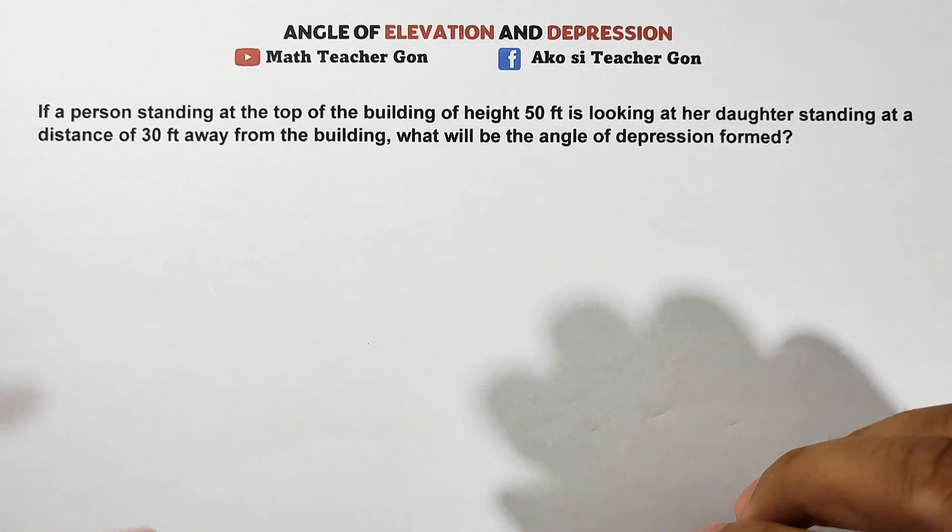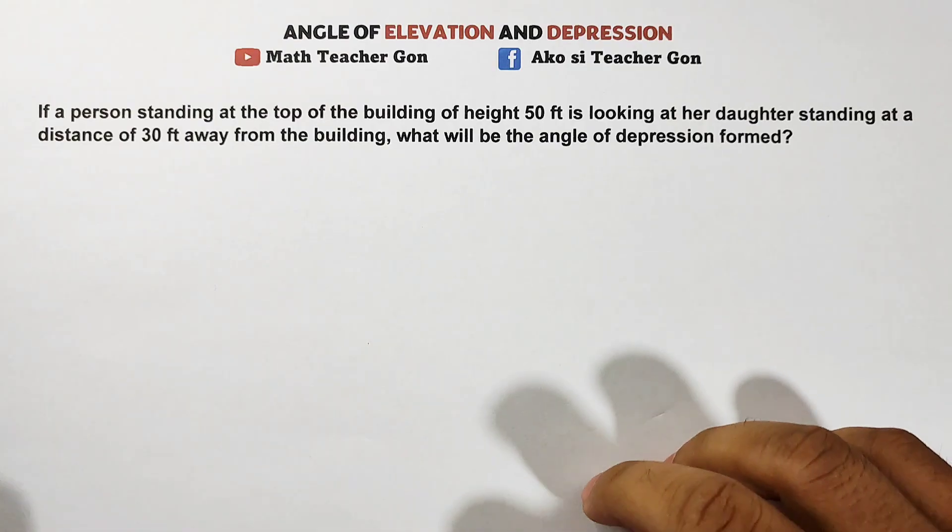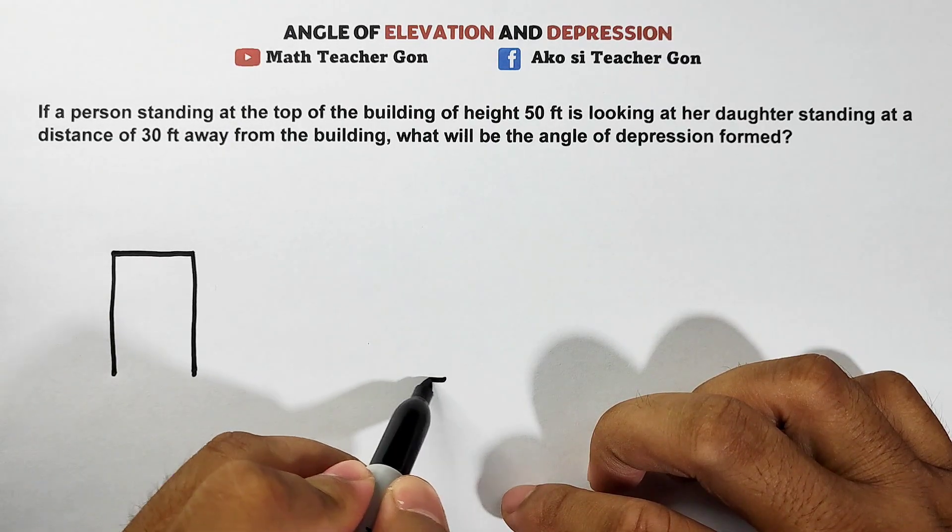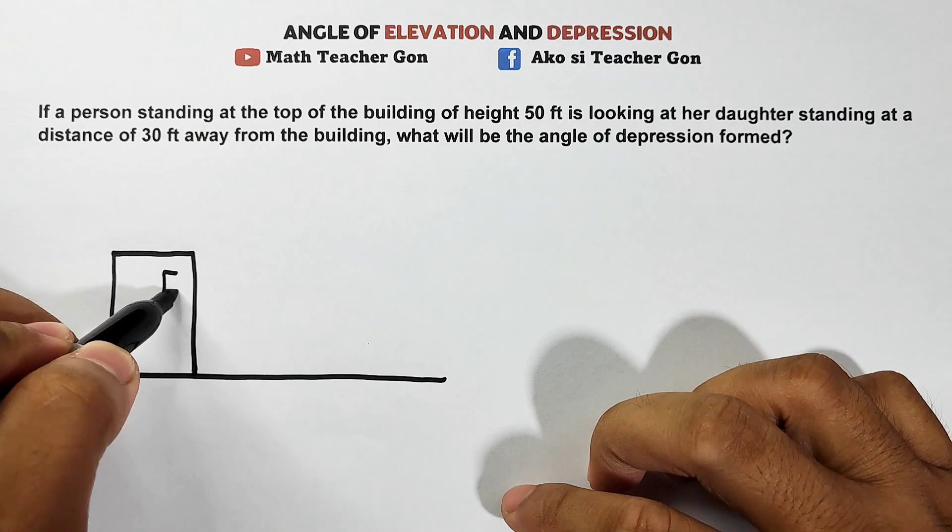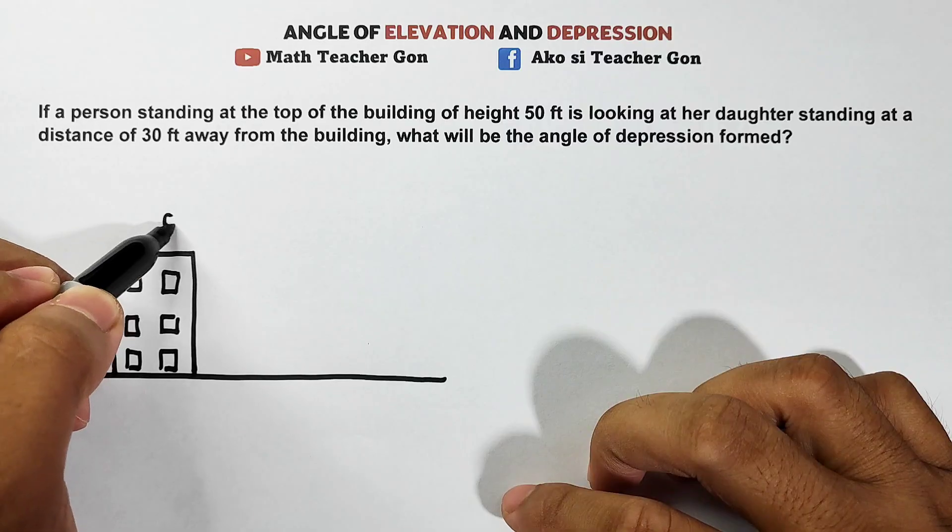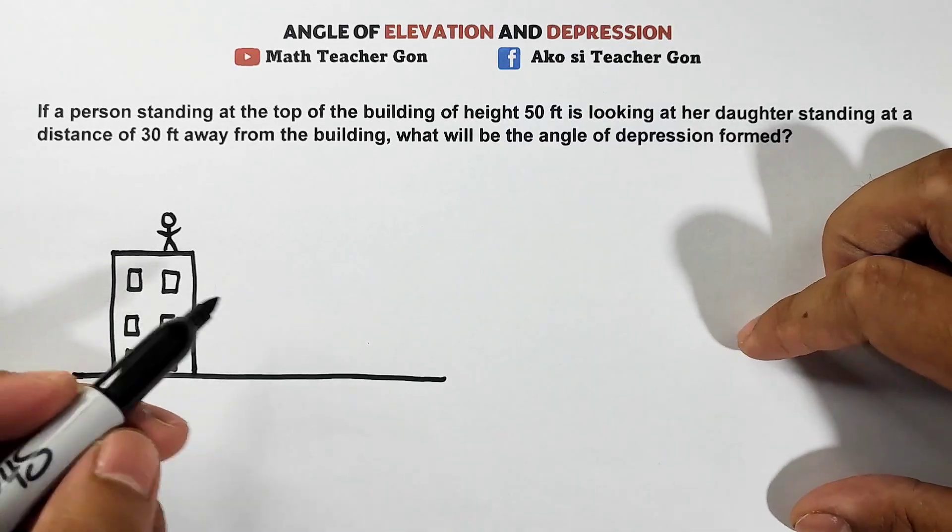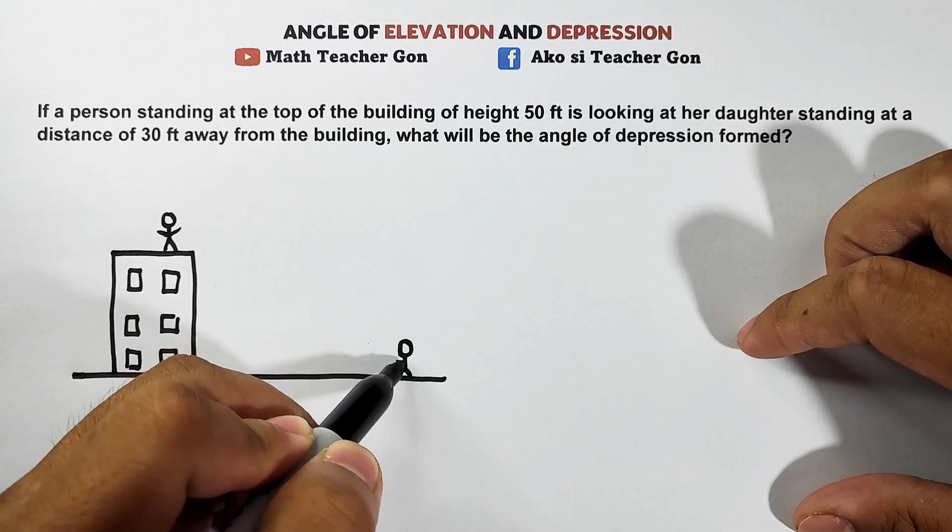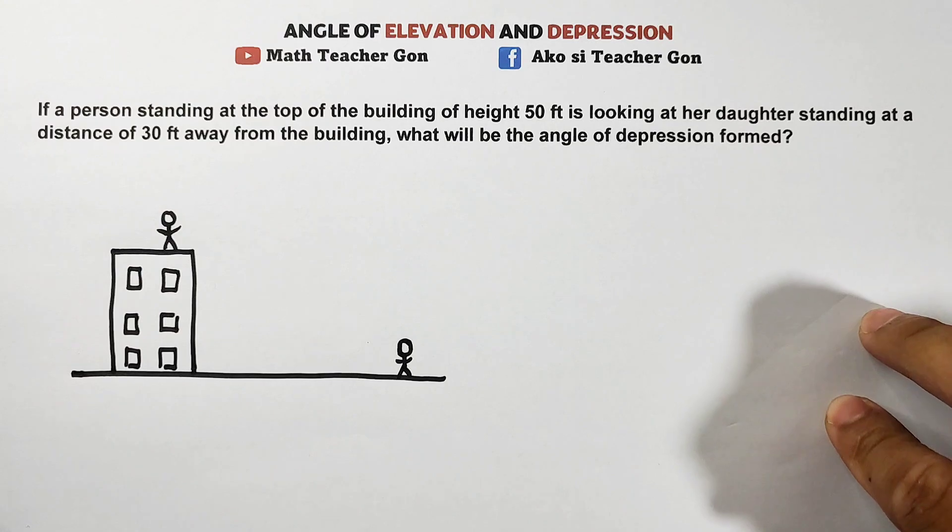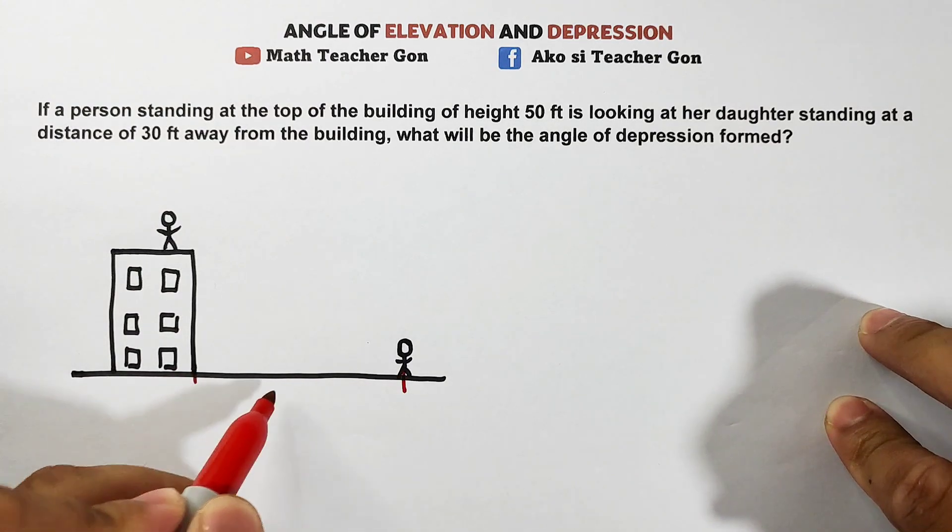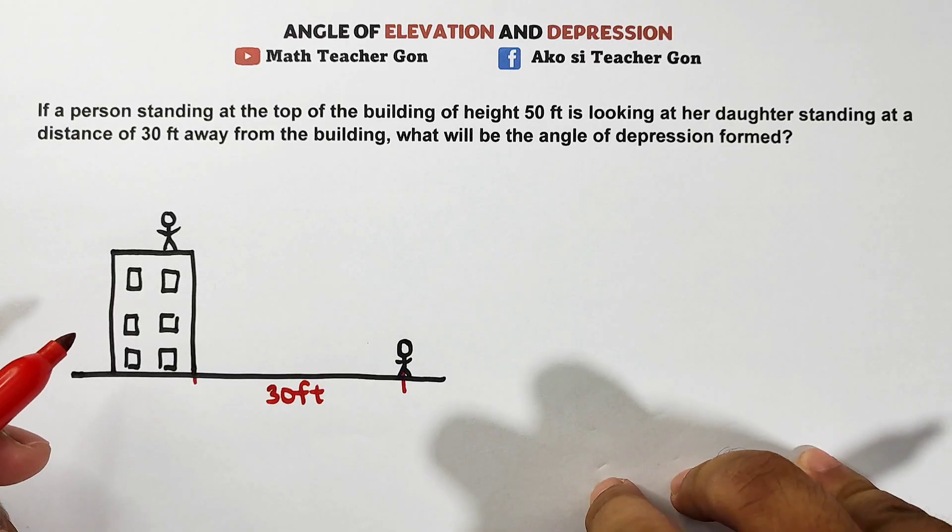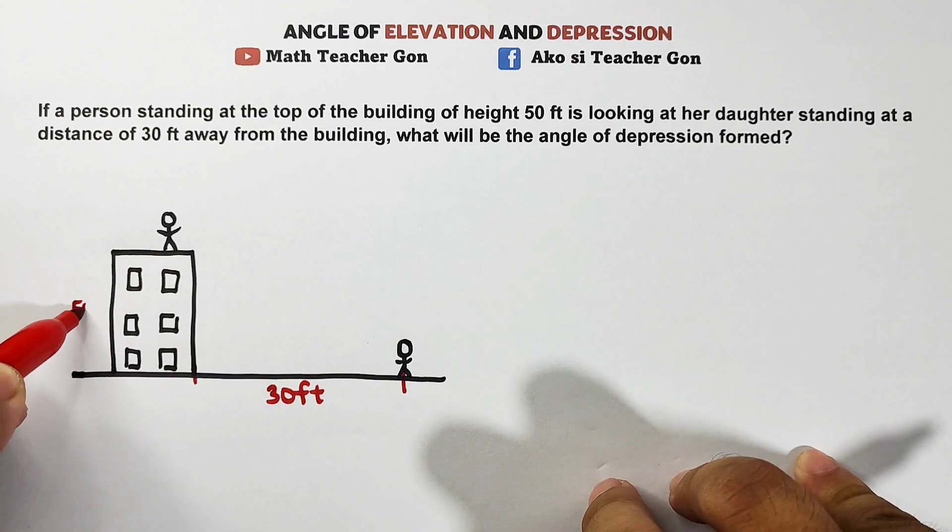If a person standing at the top of the building of height 50 feet is looking at her daughter standing at a distance of 30 feet away from the building, what will be the angle of depression formed? So here, this one is angle of depression. Meaning there's someone on top and someone below. The person is at the top of the building. So let's draw a building. Let's get used to this. There's a person at the top. Then we see their daughter who's standing here. But the distance of her daughter from the building is 30 feet away. From this point to this point is 30 feet. Another information, the height of the building is 50 feet.